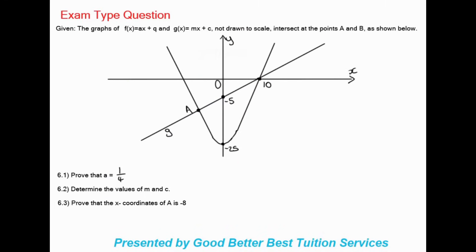Now we look at an exam-type question. Given f(x) = ax² + q and g(x) = mx + c, not drawn to scale, intersecting at points A and B. The straight line has a y-intercept of -5 and the parabola has a turning point of -25. These values will help us solve the upcoming questions.